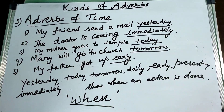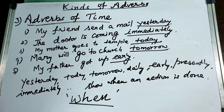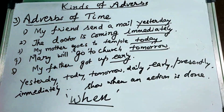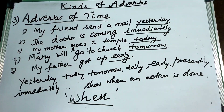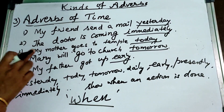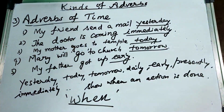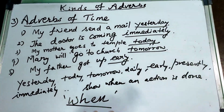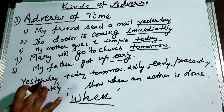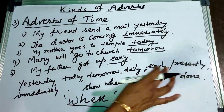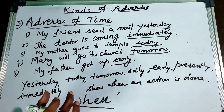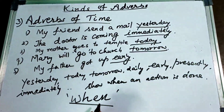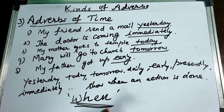The adverb of time gives the answer for the question 'when.' When did your friend send a mail? He sent it yesterday. When does your mother go to temple? She goes today. When will Mary go to church? She will go tomorrow. When did your father get up? He got up early. So words like yesterday, today, tomorrow, early, immediately are called adverbs of time.